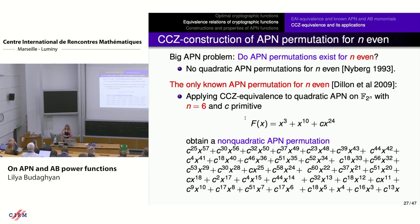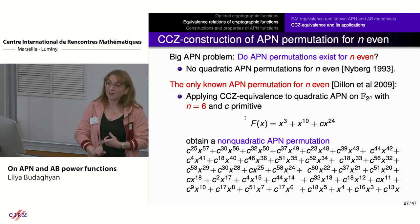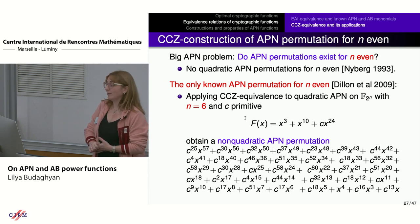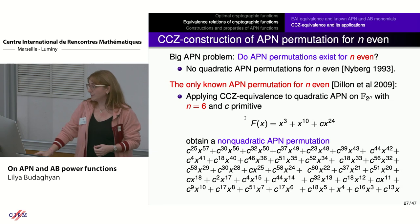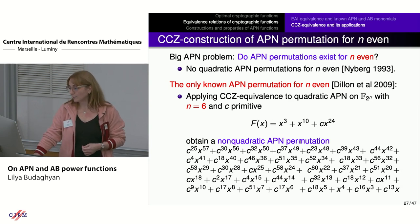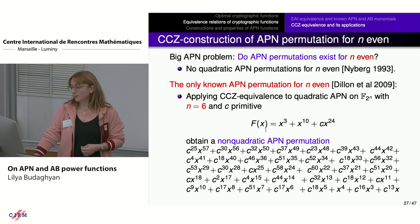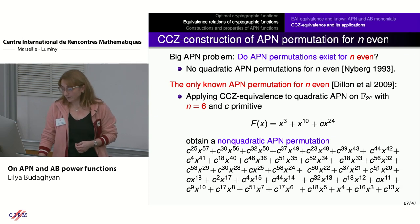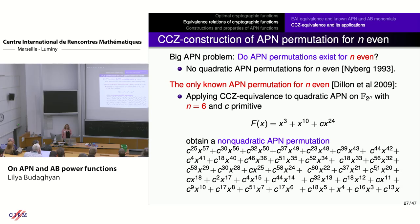Regarding the problem of APN permutations: it was known since Nyberg in 1993 that quadratic APN functions cannot be permutations when n is even. However, applying CCZ equivalence to a quadratic function can potentially yield an APN permutation. That is what Dillon from the National Security Agency of the US did — together with his team in 2009, he applied CCZ equivalence to a function over the field with 2^6 elements and obtained a non-quadratic APN permutation.